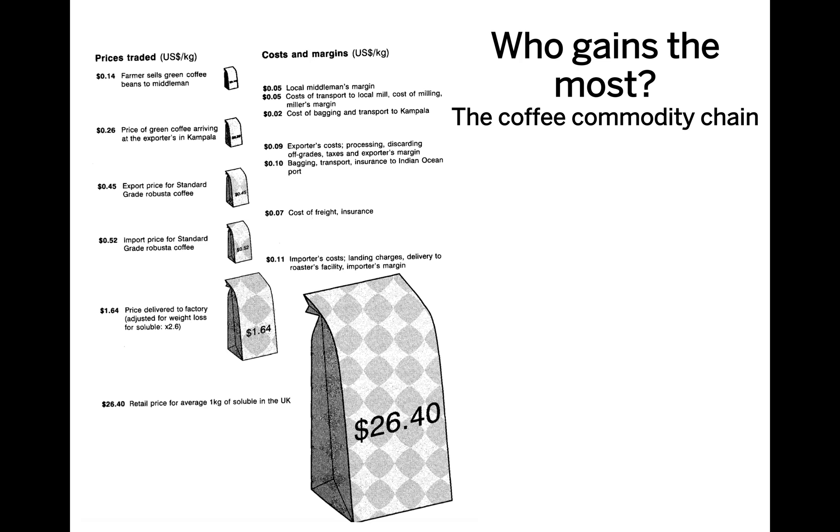So who gets the most in this chain of commodity coffee? If you look at the example, a farmer sells green coffee beans to the middlemen for 14 cents per kilogram. This is sold in Uganda in Kampala for a quarter cents per kilogram. By the time it's delivered to factory, it's about $1.64 per kilogram. And by the time it's retail price for a kilogram of soluble coffee in the UK, it's about $26.